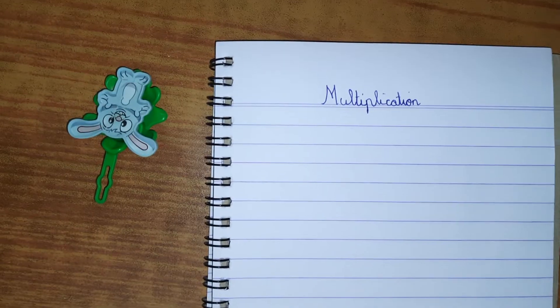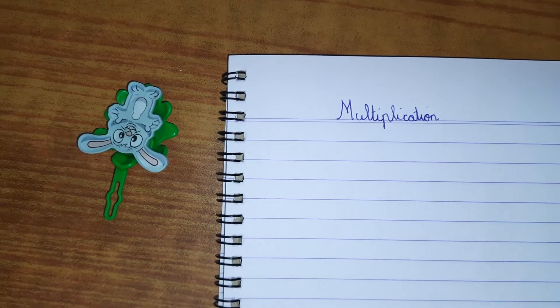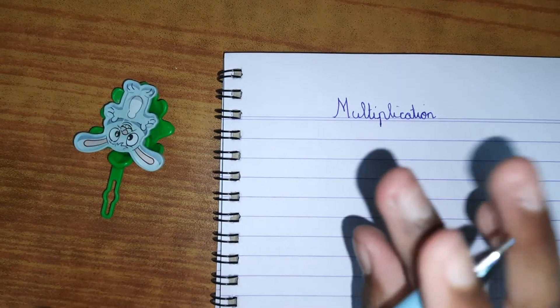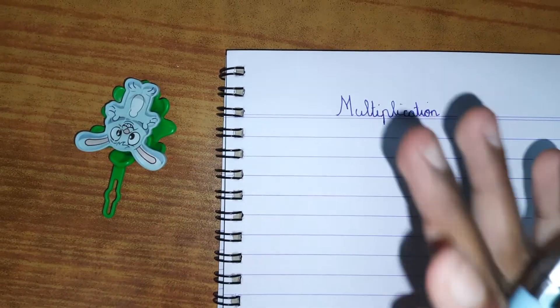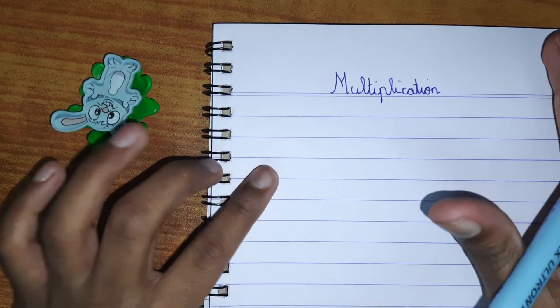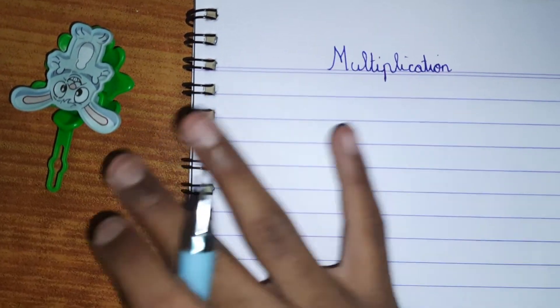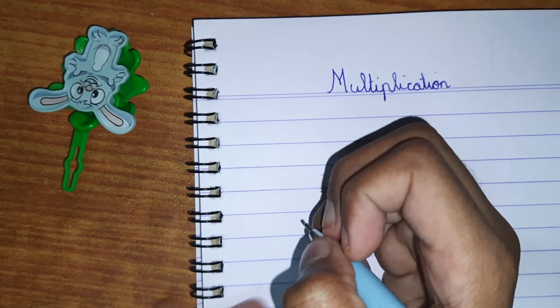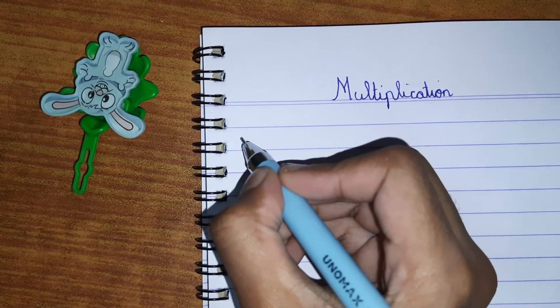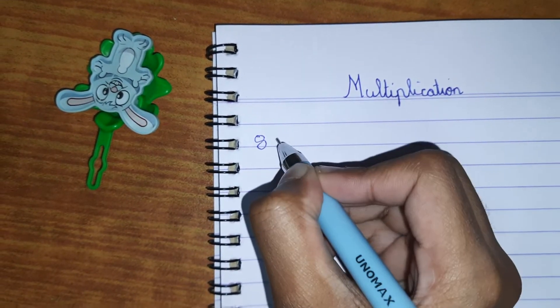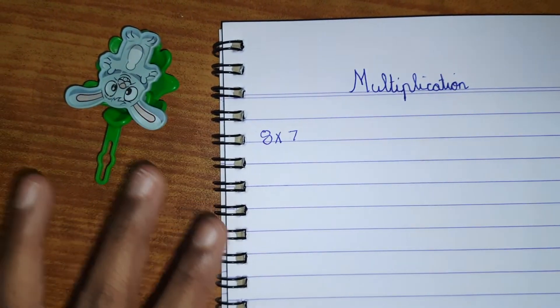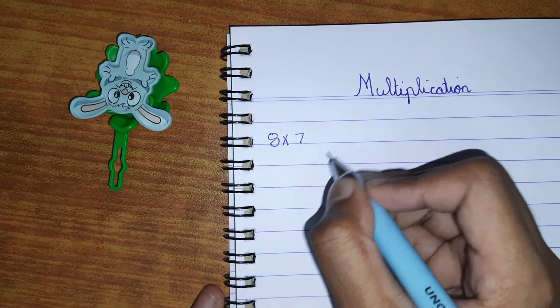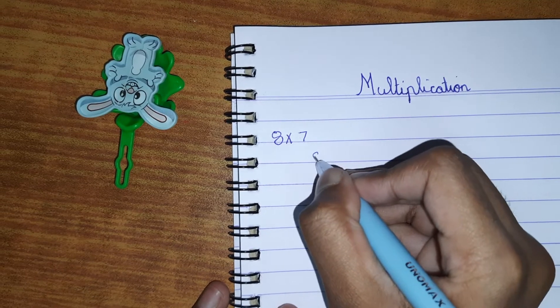So without further ado, let's see how to do it. I just wrote the heading here. Now let's take an example. We're gonna start with a simple one first because it's better to start off with. We'll take 8 multiplied by 7. We're not doing something like this, but the technical way you probably have done at school.